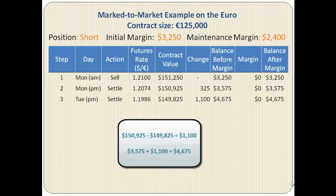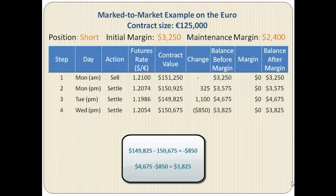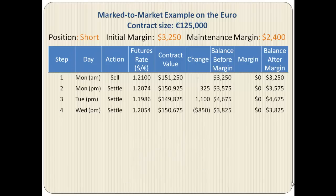At Tuesday closing time the account goes up by another $1,100, so the balance is now $4,675 in the margin account. On Wednesday at closing time the futures rate settles to 1.2054, which means the account has lost $850 compared to the day before, and that is deducted from the balance, which drops to $3,825.